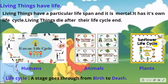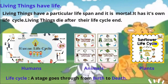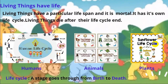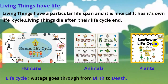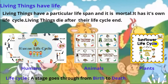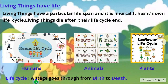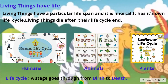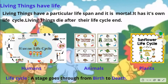Living things have life. They have a particular life span and are mortal — living things haru sangha chee simit life span hun cha. A life cycle is a stage that goes through from birth to death, such as the human life cycle, animal life cycle, and plant life cycle.